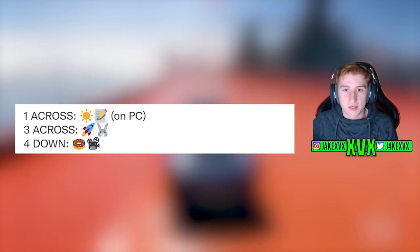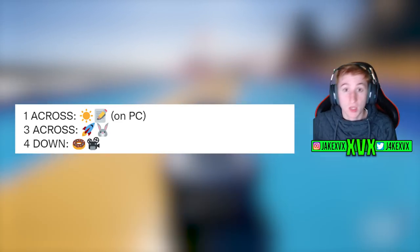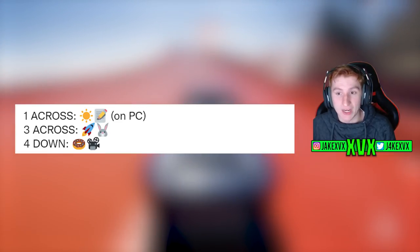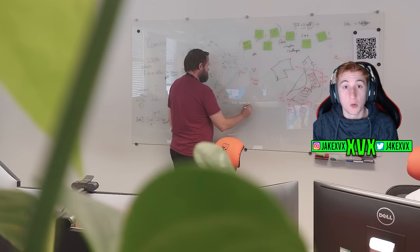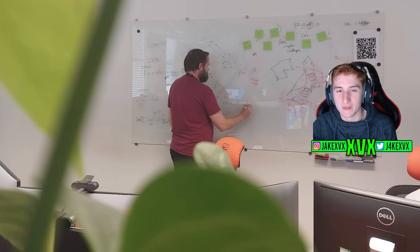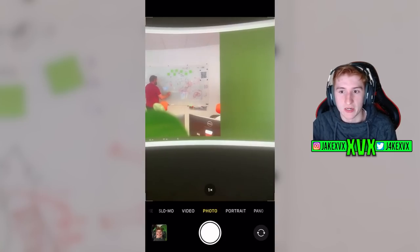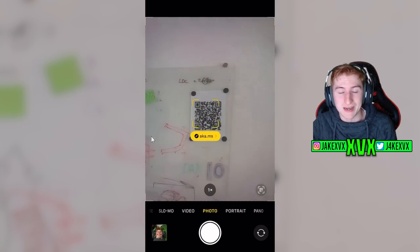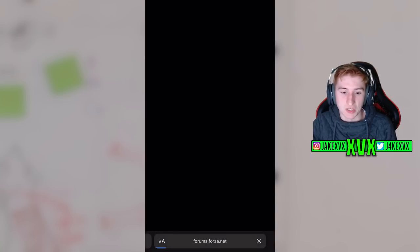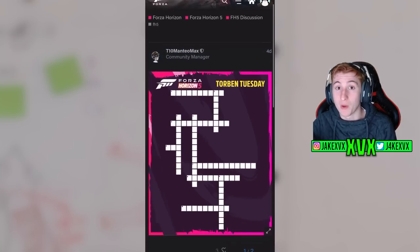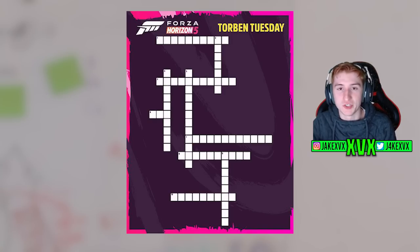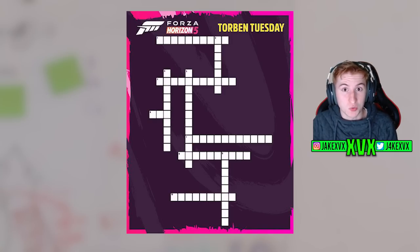But the one across three across four down thing sounds a bit like a crossword. If we move over to the actual Torban Tuesday image now, we can see that there is a QR code in the top right hand corner. We're going to focus on that really quickly first before we talk about the whiteboard. But if you scan the QR code with your phone, it pops up with a website. When you go to this website, it takes you to the Forza forums to a secret post where it gives you another secret Torban Tuesday image, which is a crossword puzzle.